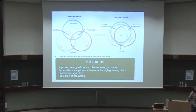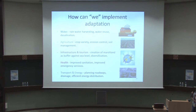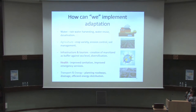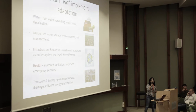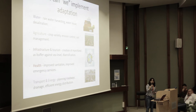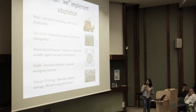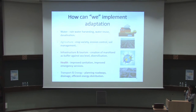We can have sustainable agricultural development using effective techniques and protection of ecosystems. For adaptation implementation — here I give some examples. For water consumption, we can have rainwater harvesting systems and desalination systems to conserve water resources. In the agricultural sector, we can introduce crop variety with effective soil management techniques and by controlling soil erosion. For infrastructure, there is the example of marshland creation to buffer against sea level rise.